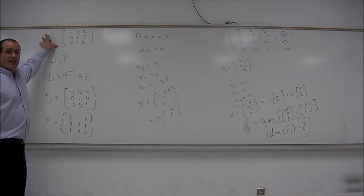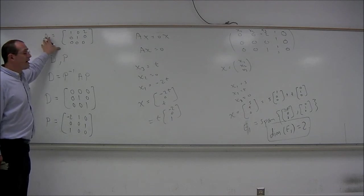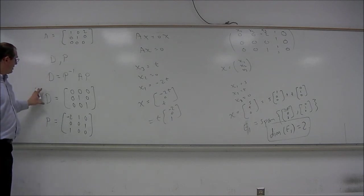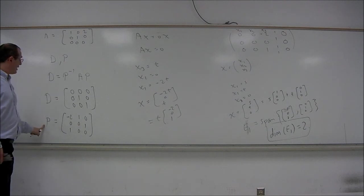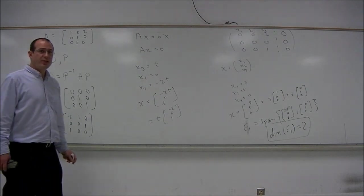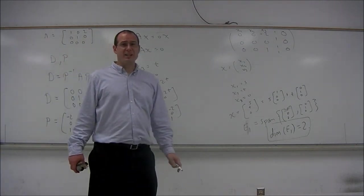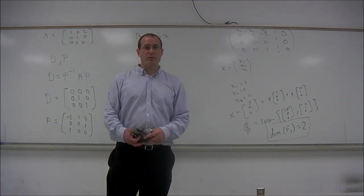So the matrix is diagonalizable because the dimension of the eigenspaces was the maximum possible, 3. And the diagonal matrix is the matrix with the eigenvalues on the diagonal. And the matrix P has, as its columns, the corresponding eigenvectors. So this has been a little discussion about diagonalization of matrices. I hope you found it helpful.